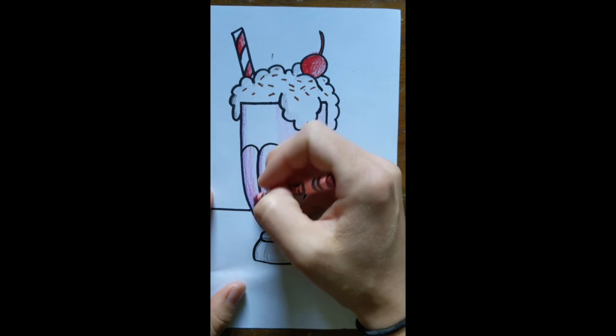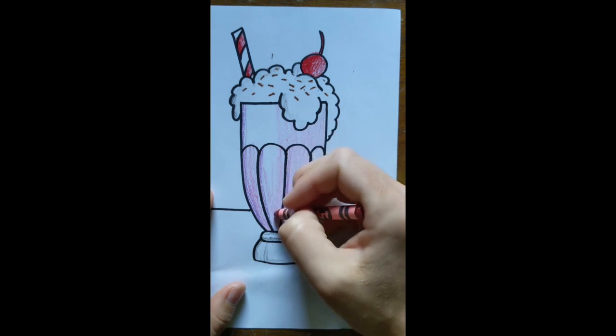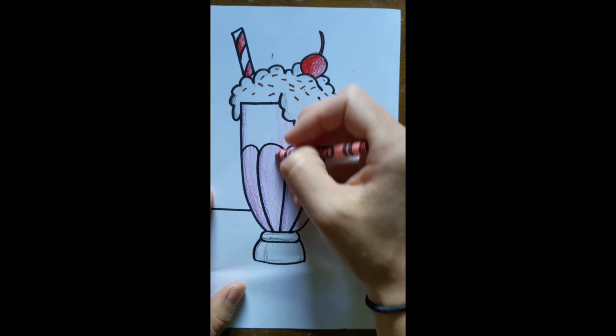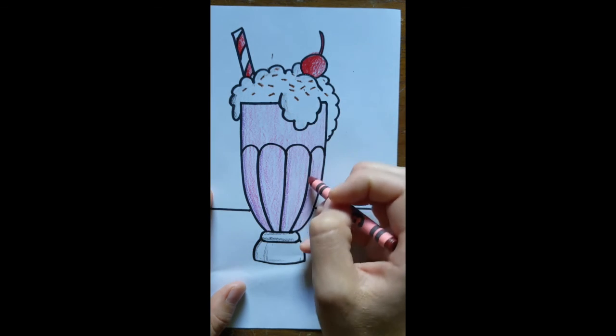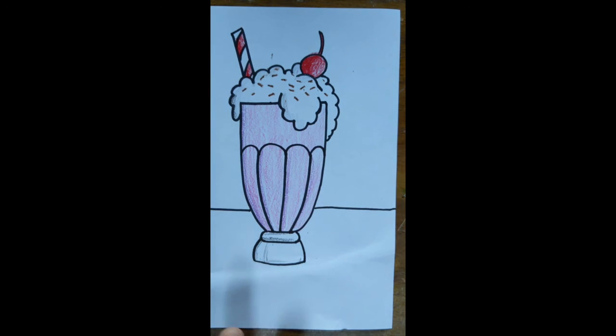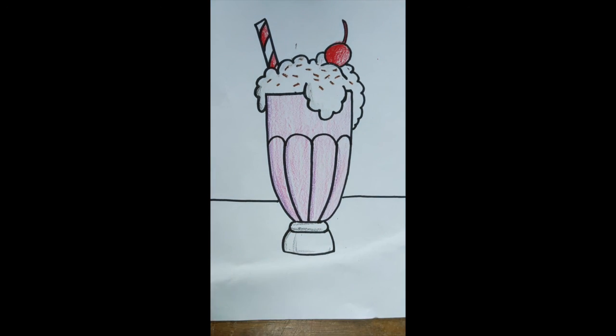And now I'm going to be adding the rest of my decal on my ground. So I want to be adding the shadow just using a black crayon like this. Add a little shadow of where my milkshake was.